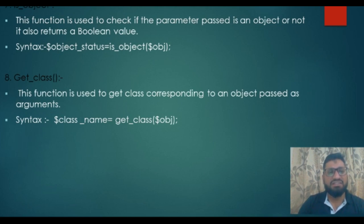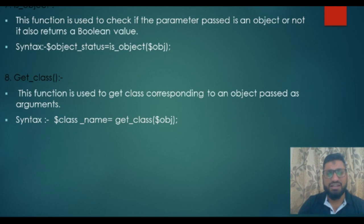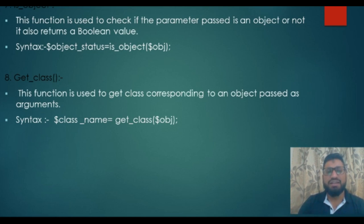The next function is is_object. This function is used to check if the parameter passed is an object or not, and it returns a boolean value. The syntax is: $object_status = is_object($object). The final function, get_class, returns the class corresponding to an object passed as an argument. The syntax is: $class_name = get_class($object).